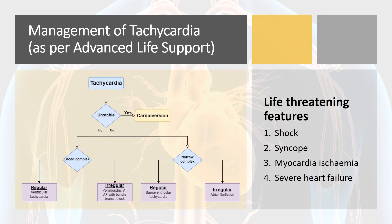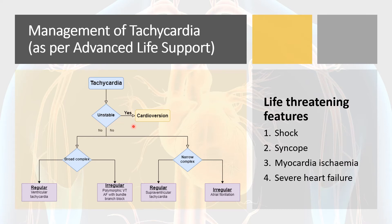This guidance is based on advanced life support from the European Resuscitation Council. The first step in management is to assess whether the patient is stable or unstable. Patients are considered unstable if they have any life-threatening features: shock defined as systolic blood pressure less than 90 mmHg; history of syncope or loss of consciousness; evidence of myocardial ischemia or infarction on ECG; or presence of severe heart failure or pulmonary edema. Unstable patients should be treated with cardioversion irrespective of the type of tachyarrhythmia.